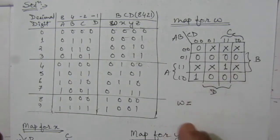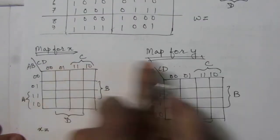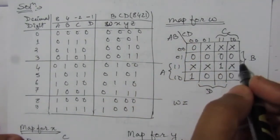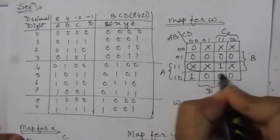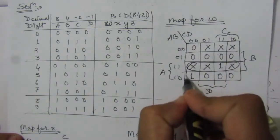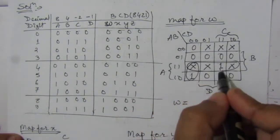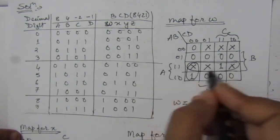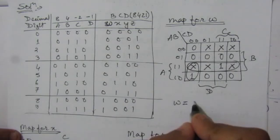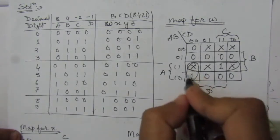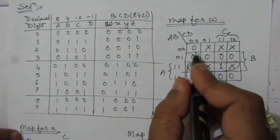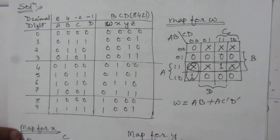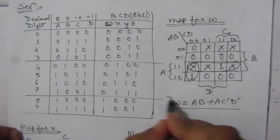After completing the W K-map, we combine the 1-values. There are two combinations: one gives AB, and the other term gives AC̄D̄. So the expression for W is: W = AB + AC̄D̄.